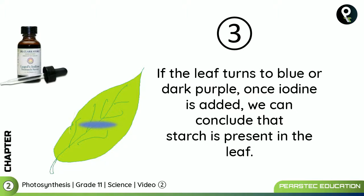If the leaf turns blue or dark purple once iodine is added, we can conclude that starch is present in the leaf. In this experiment, the leaf turns blue or dark purple, confirming that starch is present.